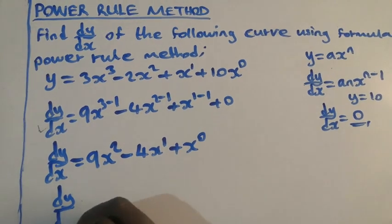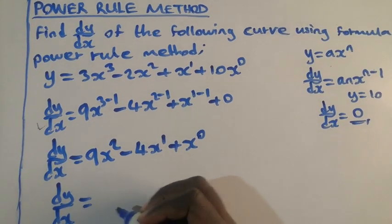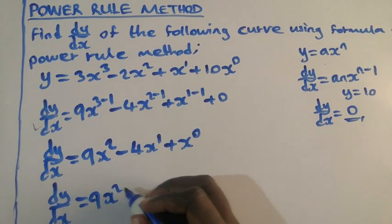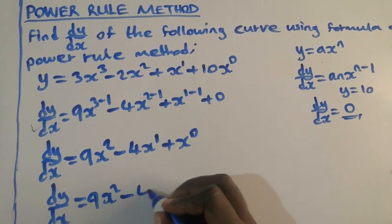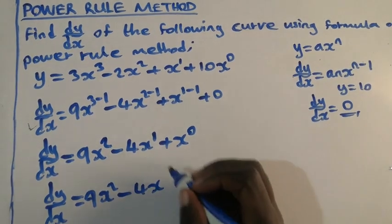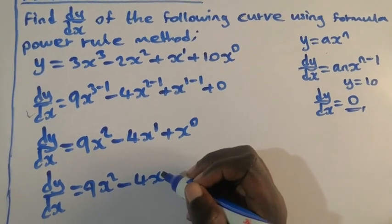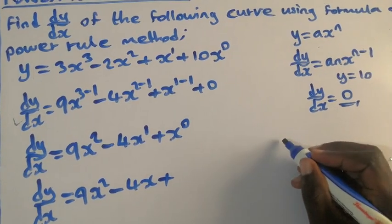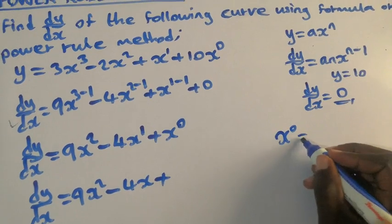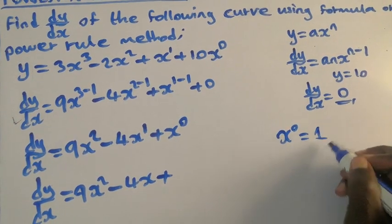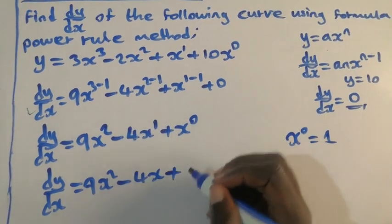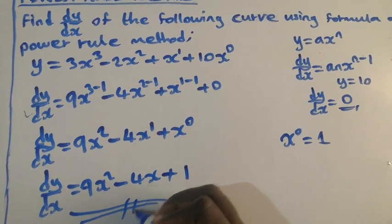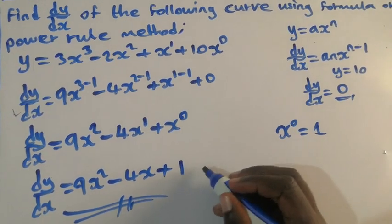dy/dx equal to 9x² minus 4x. We have to ignore now power 1, plus any number raised to power 0 is 1. So x to the power 0 gives us 1. So this is the derivative we have found.